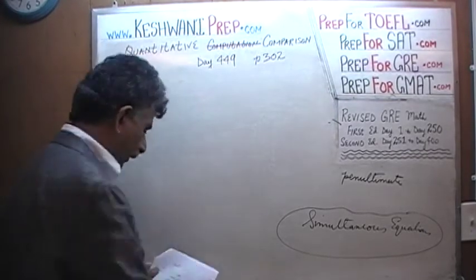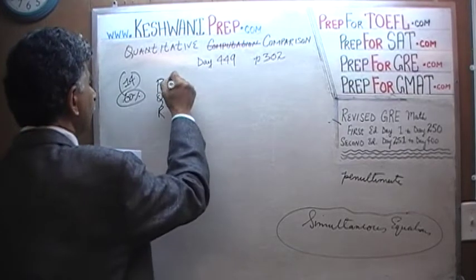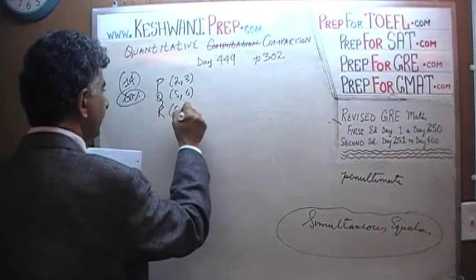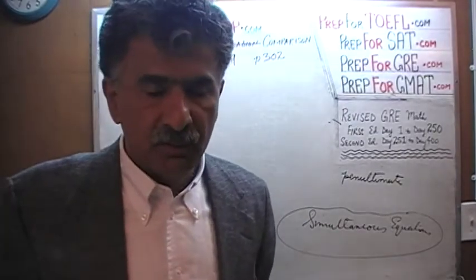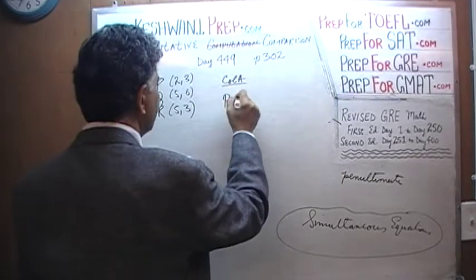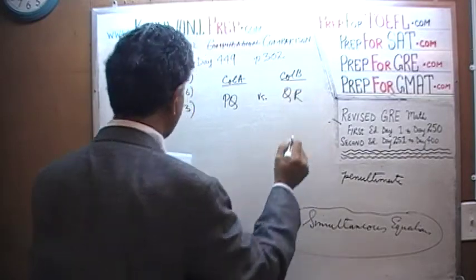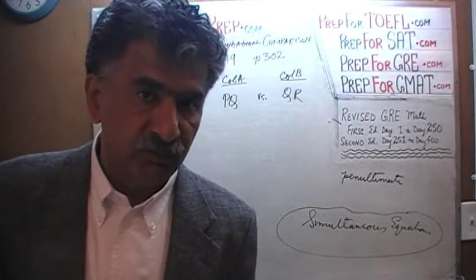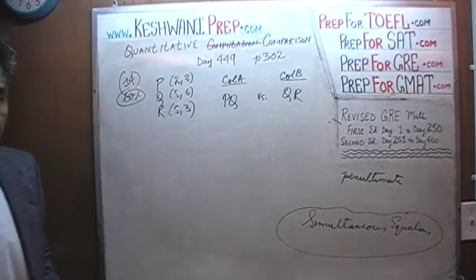Here is what the problem says. We are given three points: point P, Q, and R. Point P has coordinates 2 and 3. Point Q has coordinates 5 and 6. And R has coordinates 5 and 3. These three points are given in the coordinate system. The question asks us to compare — in column A, the distance PQ versus column B, the distance QR. I want you to pause the video and do the problem yourself. Once finished, resume the video and compare your work against what we will do together.